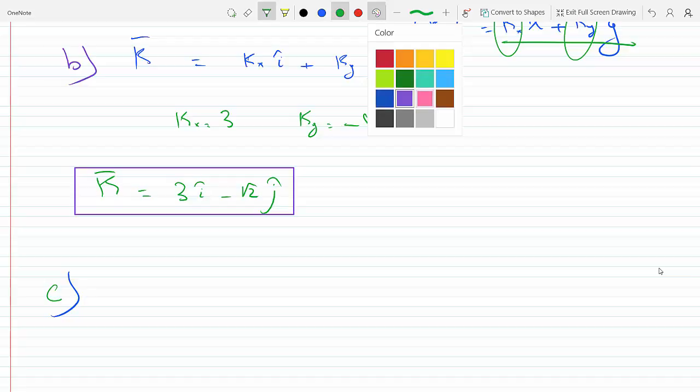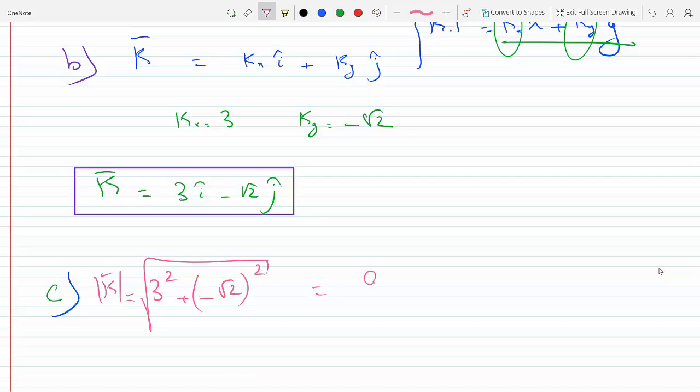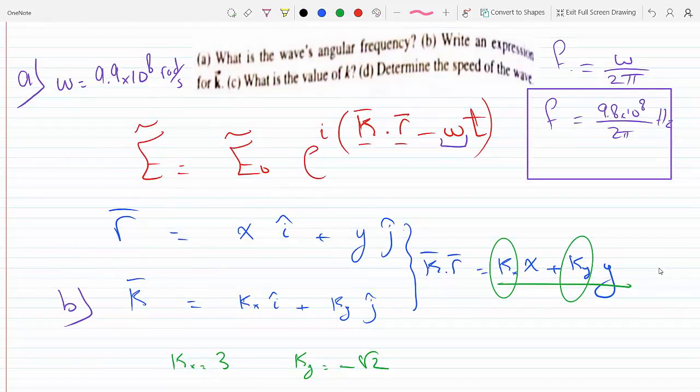K absolute value will be 3 squared plus minus root 2 squared, which will be 9 plus 2, which will be square root 11 per meter.